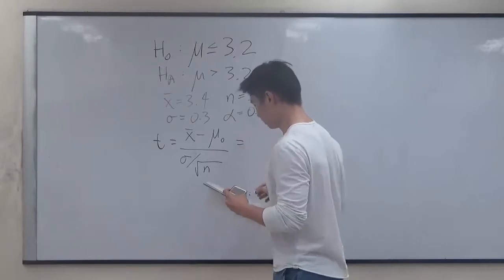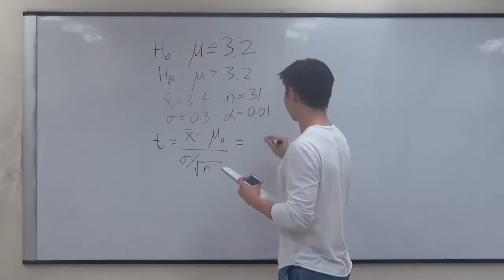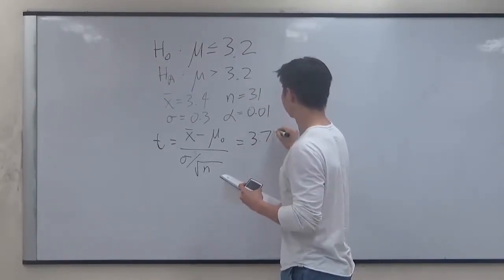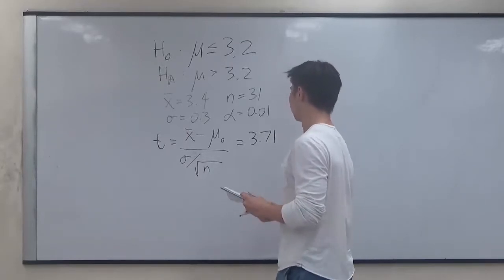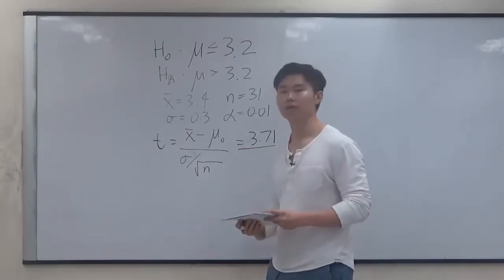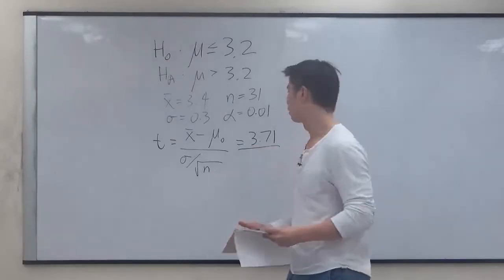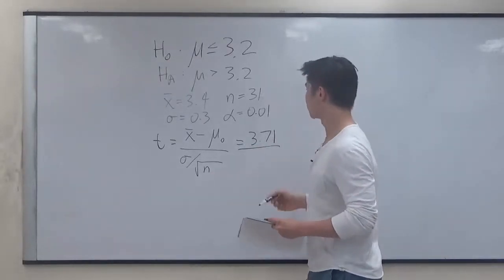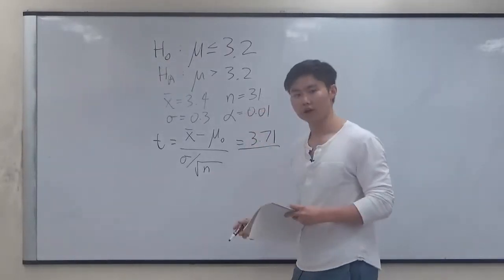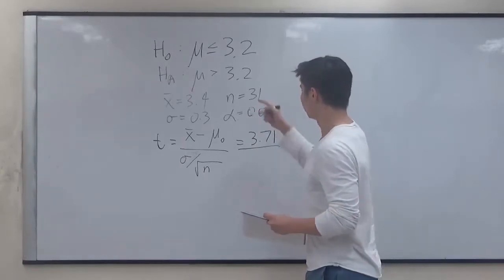And if we evaluate that, we get 3.71. Now we have to compare this value with the value that we see in the table for 31 sample size and an alpha value of 0.01. So in order to do that, we first need to find the degrees of freedom in our t-table.